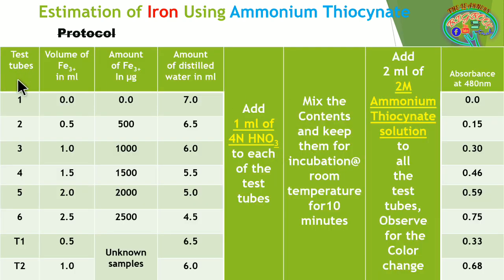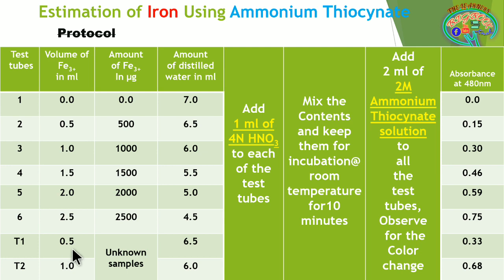In the protocol, we take 8 test tubes including test samples. The first is the blank, containing no reference or sample. Then we take references of 0.5 ml, 1 ml, 1.5 ml, 2 ml, and 2.5 ml. After that, we take two test samples of unknown concentration: 0.5 ml and 1 ml. The blank has 0 micrograms of ferric ions; the references correspond to 500, 1000, 1500, 2000, and 2500 micrograms respectively.